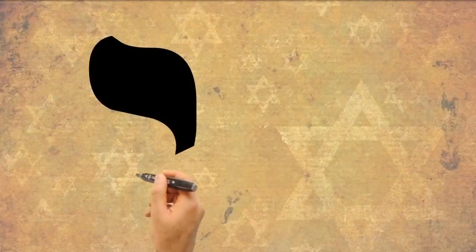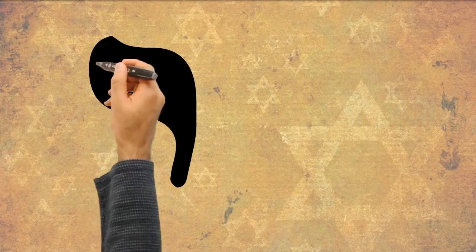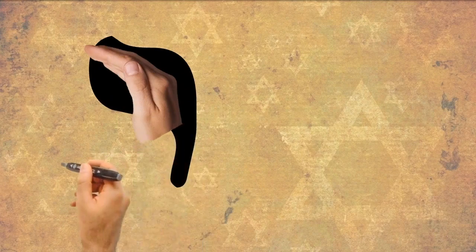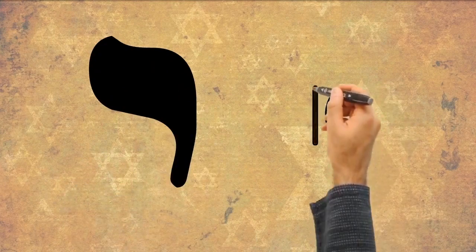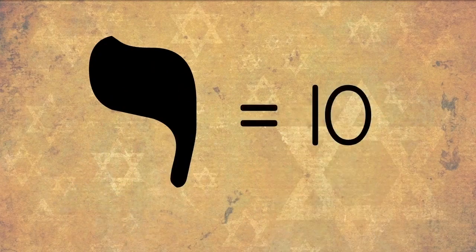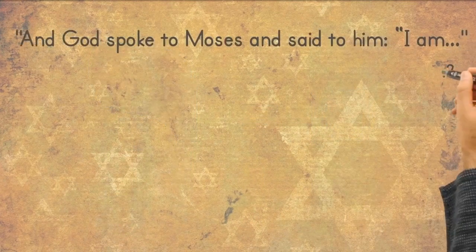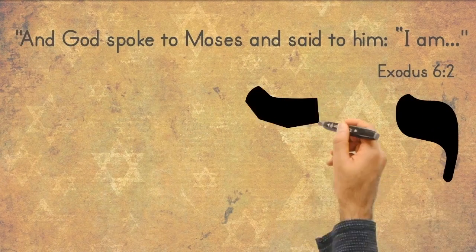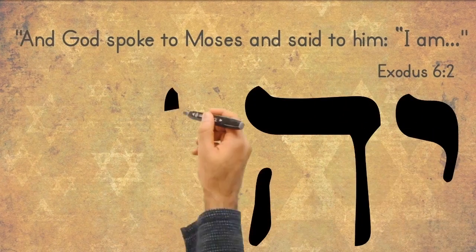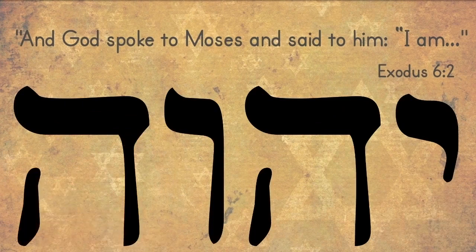The smallest letter in the Hebrew alphabet is Yod, which means hand. It represents the number 10 and is the first letter in the ancient sacred name of God, comprised of the letters Yod, He, Vav, and He.